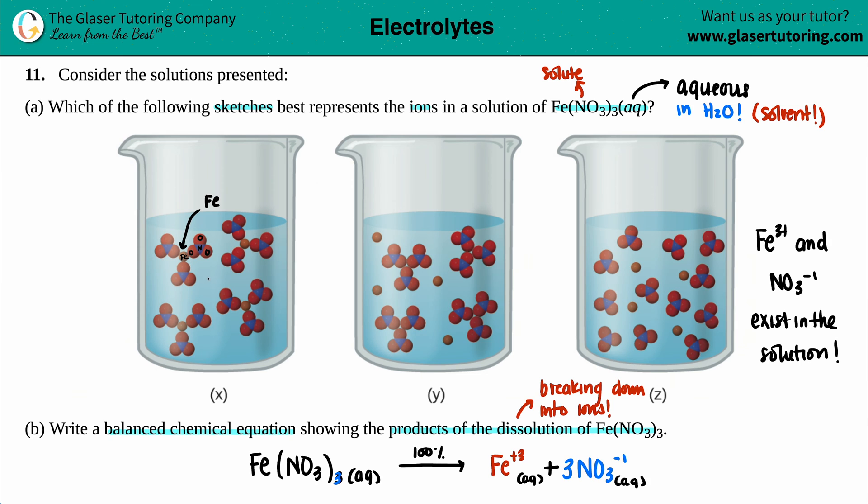So you got Fe, you have NO₃. There's three of them around the iron. This is if it was by itself, Fe(NO₃)₃. But we just said that in aqueous solutions, they're not going to be together. We need to see the ions separately. So this one is not it.